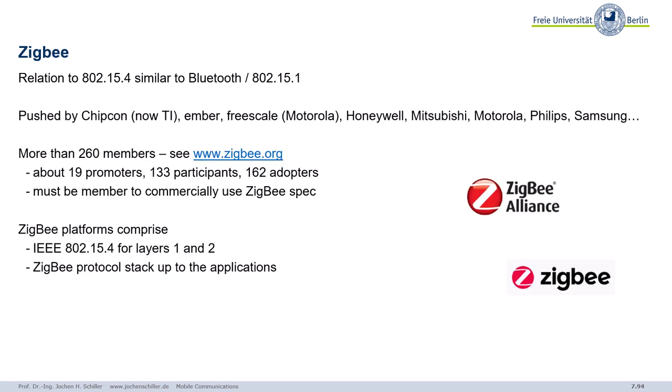ZigBee has been quite successful for the Internet of Things and home automation, with many controllers contributing to this protocol. The relationship between 802.15.4 and ZigBee is similar to that of 802.15.1 and Bluetooth. There are some initial members, growing to more than 260 members, promoters, and participants. One difference is that you usually will not get all the specifications — it's not as open as wireless LAN. IEEE covers the lower layers and ZigBee covers the higher layers of the protocol stack and the applications.